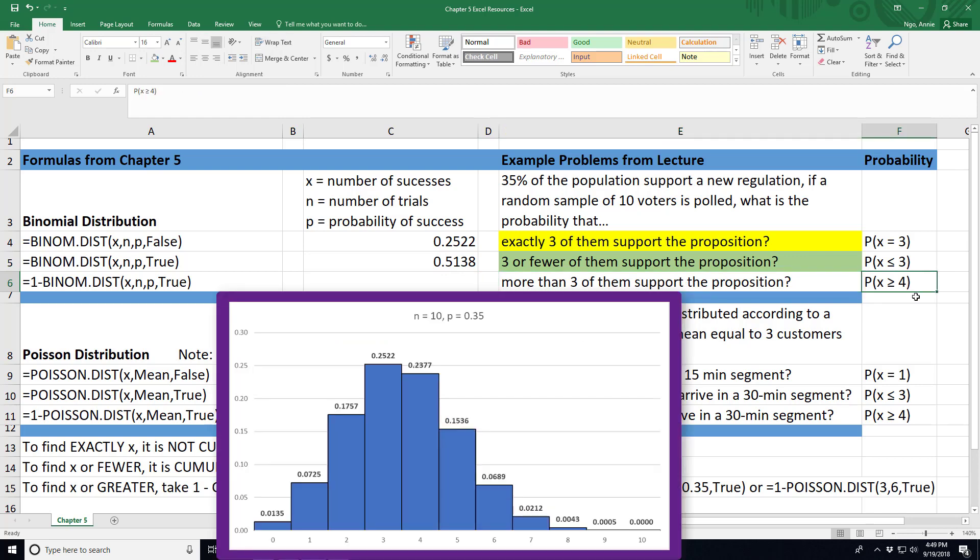So we have to write that as a probability statement in that more than three means four or more. So that's x is greater than or equal to 4. So this is the probability that 4, 5, 6, 7, 8, 9, or 10 voters support the proposition.